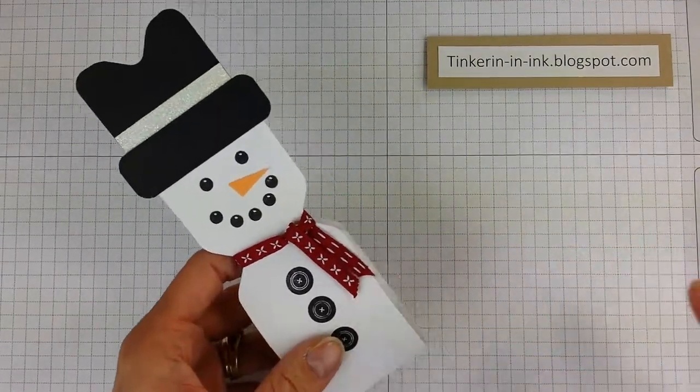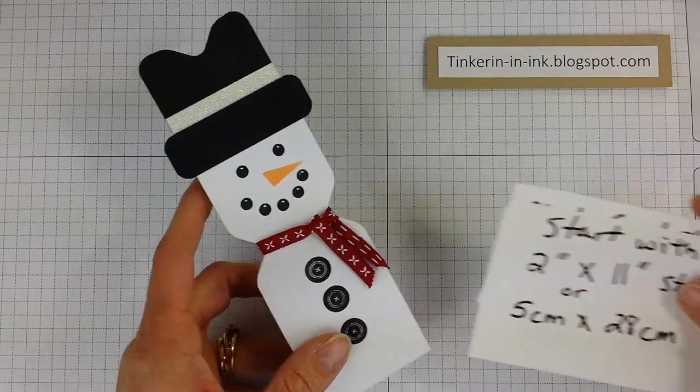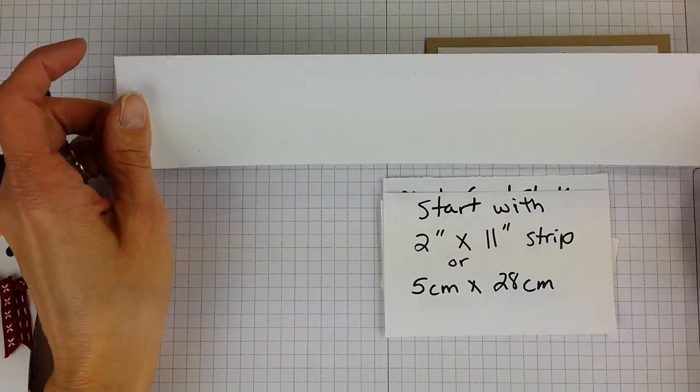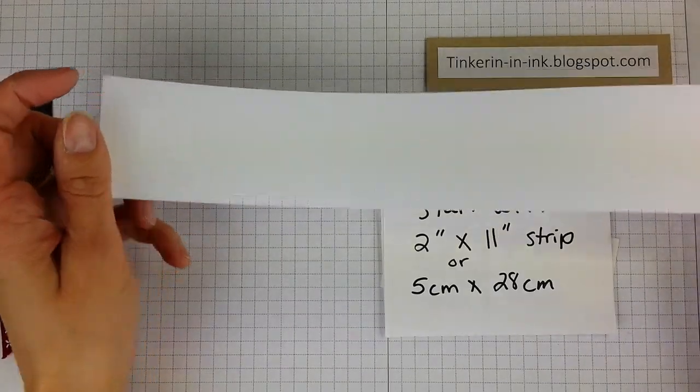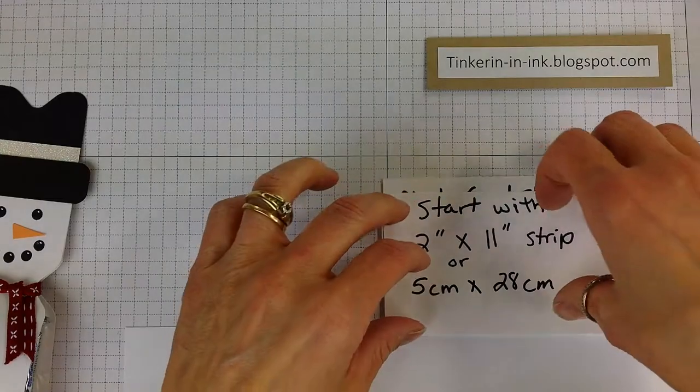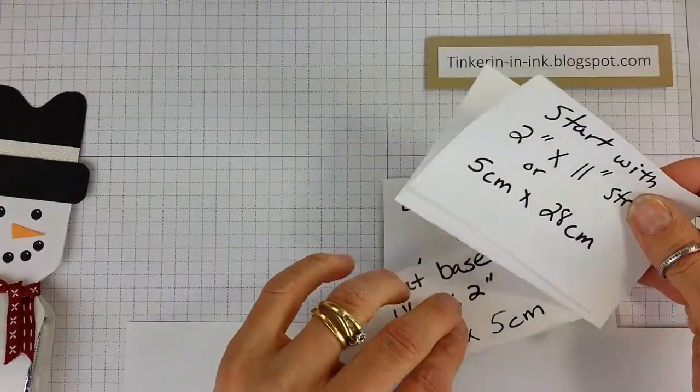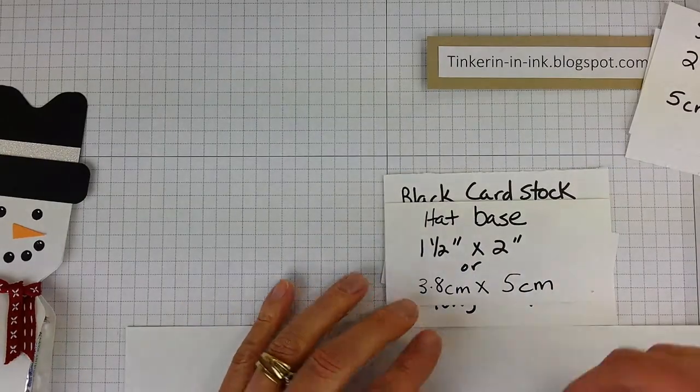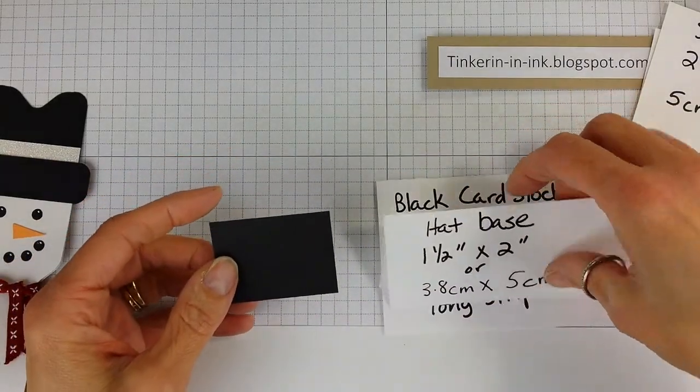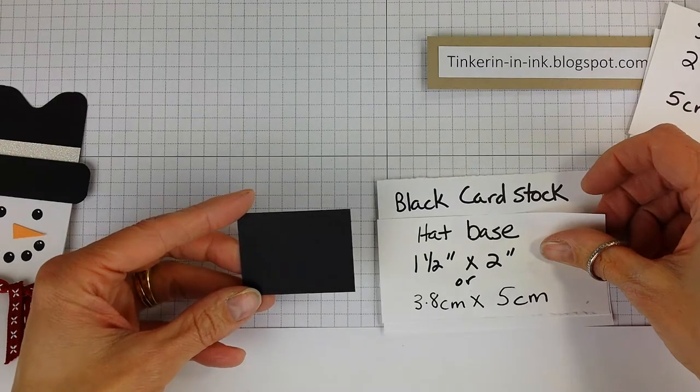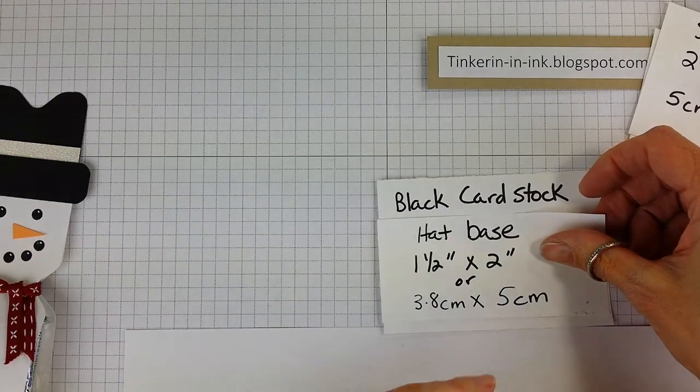So let's get started. We're going to start with a 2 x 11 inch strip of Whisper White paper. We're also going to need a hat base that is black cardstock and it is 1.5 x 2 inches or 3.8 x 5 centimeters.